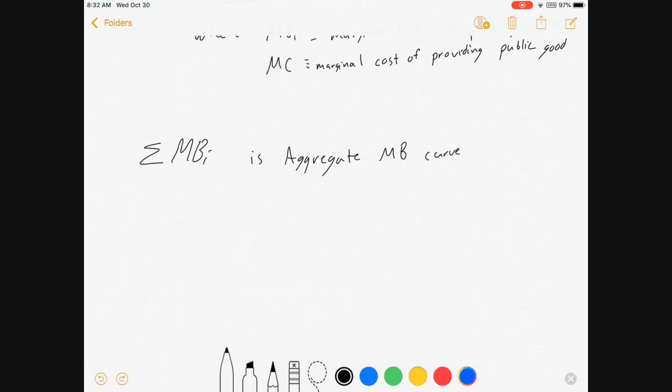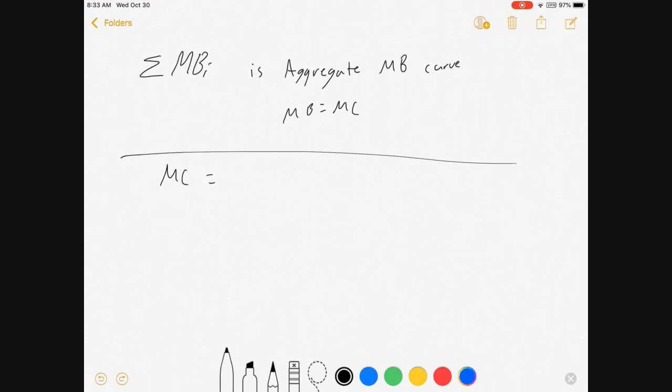Now this aggregate marginal benefit curve means that this quite simply is just a marginal benefits equals marginal cost situation. Shouldn't be too surprising because anytime we're finding the optimal anything, it's always the marginal of one marginal benefits equals marginal cost in some form.